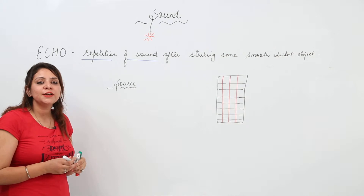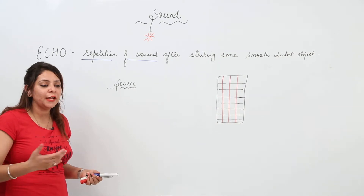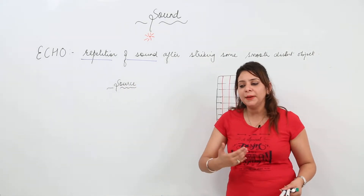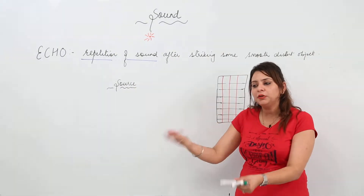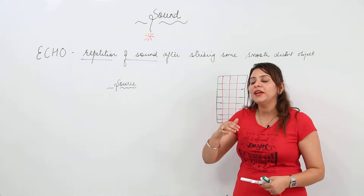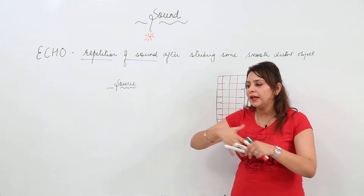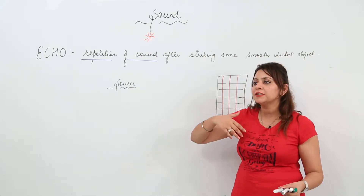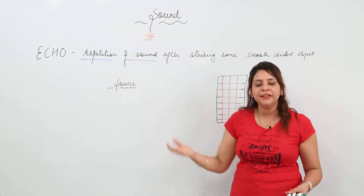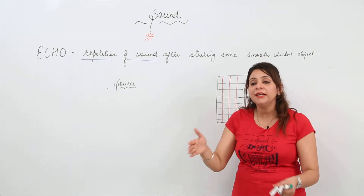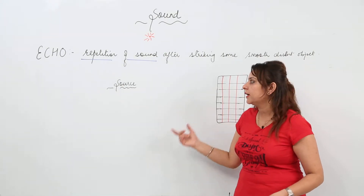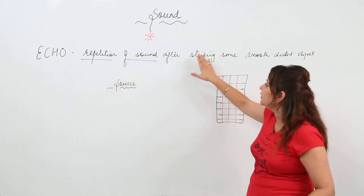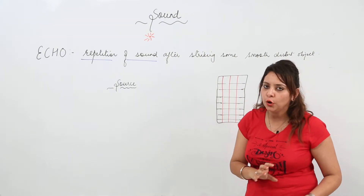Let's see what conditions are required to hear an echo, because we cannot produce echo everywhere. Right now I'm speaking and I'm not able to hear it again, but when I speak in an empty house without curtains, or standing on top of a hill, I can hear that sound. So why not here? Echo is the repetition of sound after striking some smooth distant object.